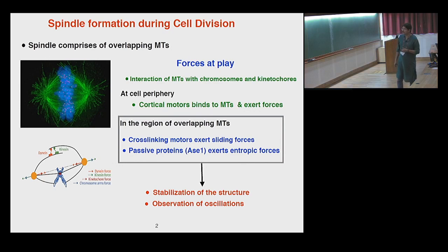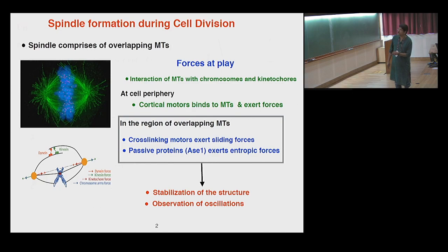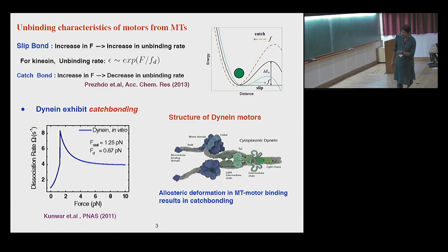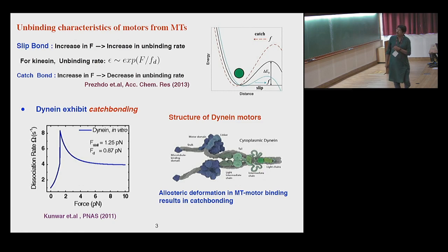What has been established from experiments is that the presence of these motors or passive cross-linkers is crucial for the stabilization of these structures. Typical characteristic oscillations in these mitotic spindle structures have been measured, quantified, and people have tried to understand them theoretically. I want to focus on the processes going on in the overlap region where these motor proteins are cross-linking the microtubules. These motor proteins stochastically bind and unbind to the filaments, and we want to first understand the binding characteristics of these motor proteins — in particular, the unbinding characteristics of these motors to the microtubule filaments.